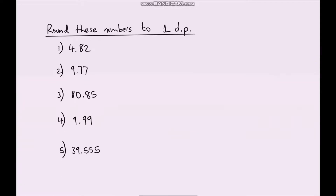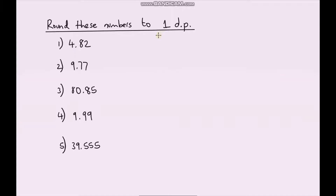Pause the video and have a go at rounding all of these numbers to one decimal place. Because we're rounding to one decimal place, that is our first decimal place, so we draw our line there and look at the digit after it. If this number is greater than or equal to 5 we would round up to 4.9; if it's less than 5 we would round down to 4.8. You can clearly see that this number is less than 5, so we round down and our answer is 4.8.